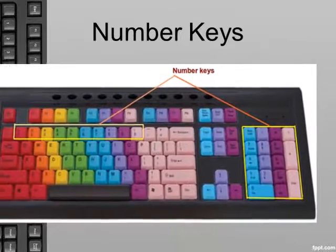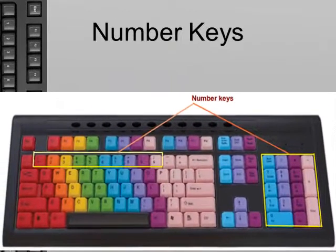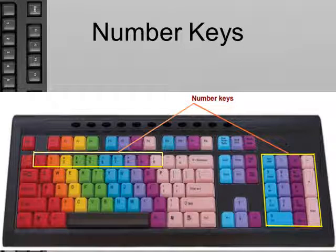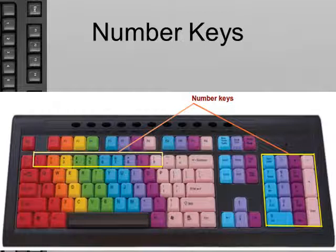Number keys have numbers on them ranging from 0 to 9. They are 10 in number. They are present above the alphabet keys and are given in order. We can type our age, roll number, house number, mobile number, etc. using number keys.